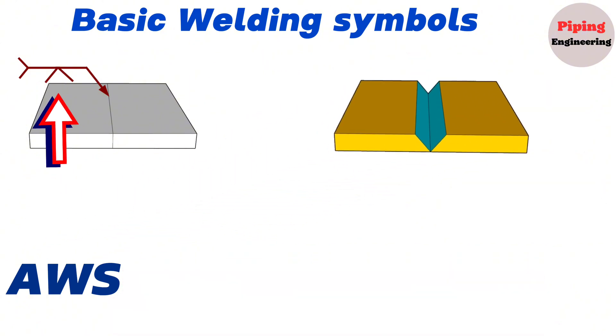If the welding symbol is showing below side of the reference line, the weld is carried out on the side of the joint at which the arrow points, top side.